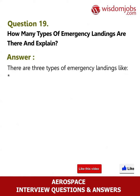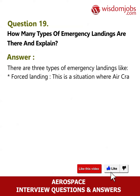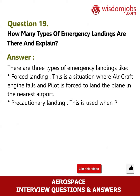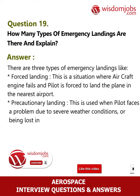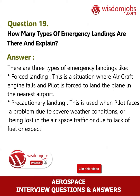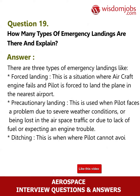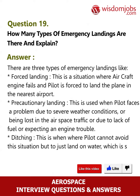Question 19: How many types of emergency landings are there? Answer: There are three types of emergency landings. Forced landing: this is a situation where the aircraft engine fails and the pilot is forced to land the plane at the nearest airport. Precautionary landing: used when the pilot faces a problem due to severe weather conditions, being lost in the airspace, lack of fuel, or an expected engine trouble. Ditching: when the pilot cannot avoid the situation but to land on water, which is safer than an airborne crash.